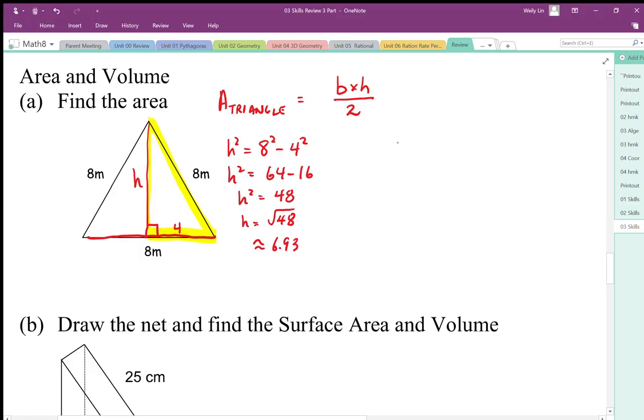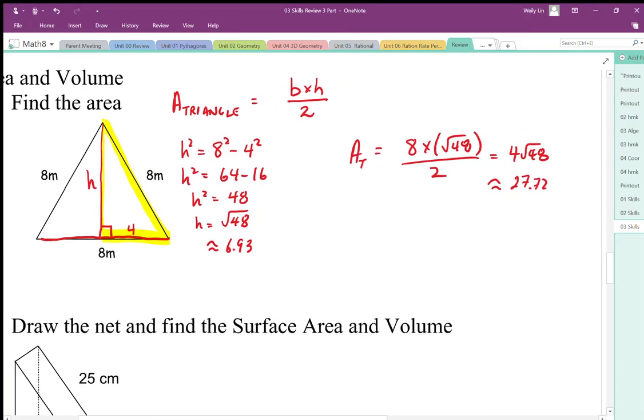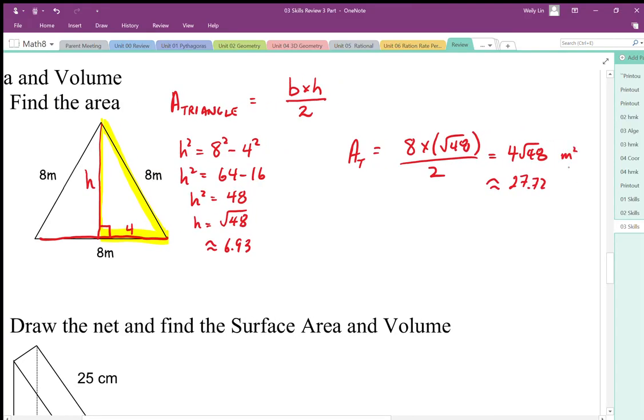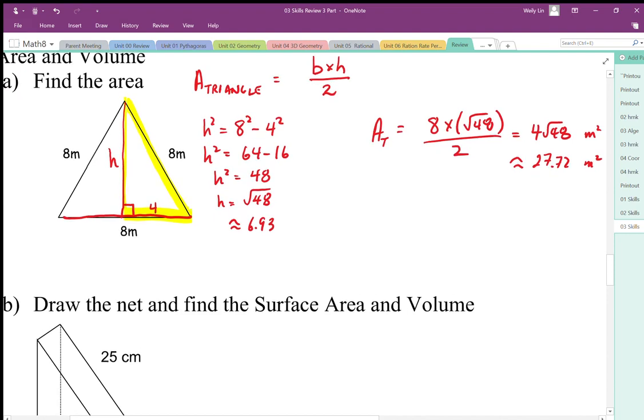So to find the area of the triangle, it's going to be base, which is 8, times the height, which is square root of 48, or 6.93. And then divided by 2, I end up with 4 root 48. As a decimal, that works out to be approximately 8 times 6.93 divided by 2, I get about 27.72, in this case meters squared. So I was making squares here to find area.